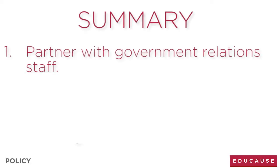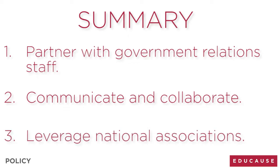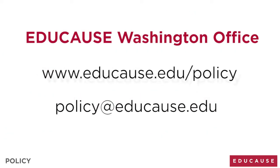In summary: first, partner with your campus government relations staff if they exist; second, communicate and collaborate across campus departments and functions; and third, leverage national associations such as Educause, NACUBO, and others. Contact the Educause policy staff in Washington DC if you have any questions about how you can become more engaged in IT policy, or if there are policy issues you would like your association staff to pursue.